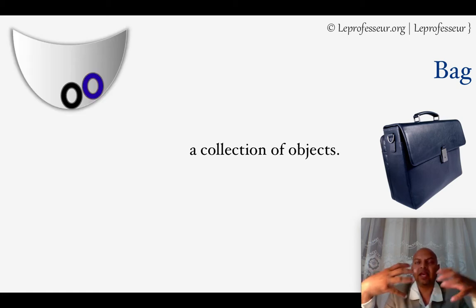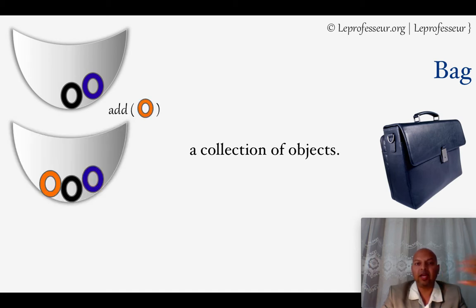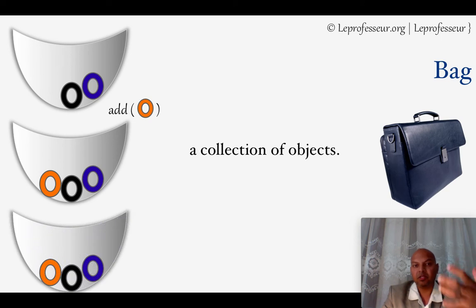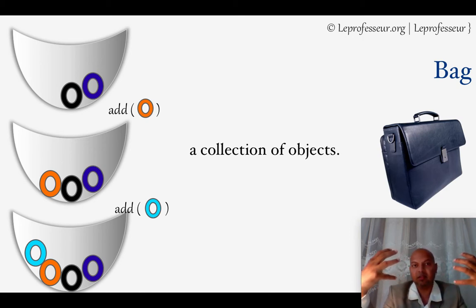Like a bag, you put different objects in your bag. In the same way we can define or design a data structure which can contain different kinds of items in it, with the restriction that items can only be added, not removed, and then the clients can process those items in any order. For example, let's say initially you have two rings in your bag, blue and black, and you do an add operation and add another ring of orange color. Another add operation, add another ring of light blue color.